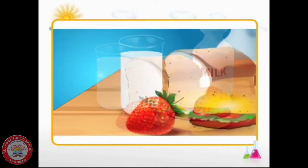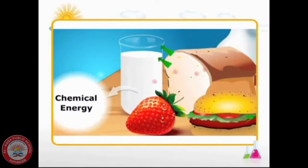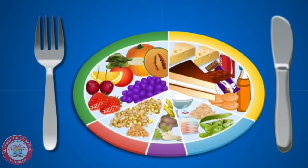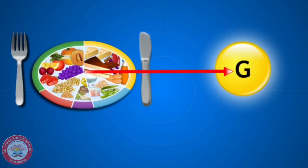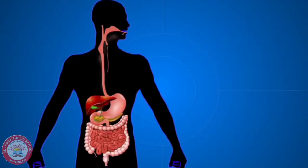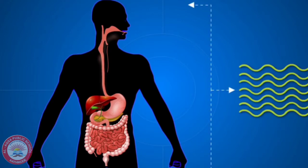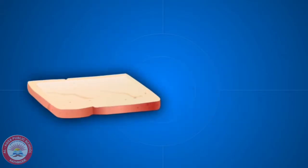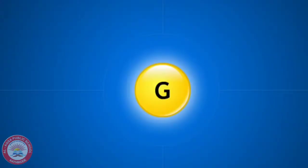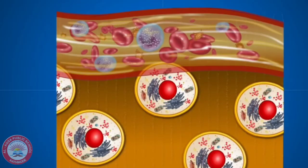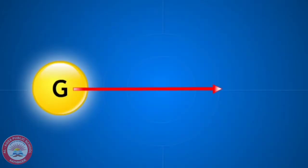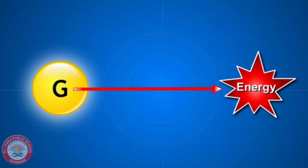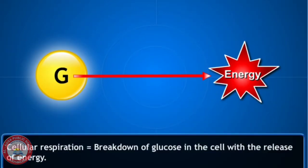What do we get energy from? We get energy from the food we eat. Food has energy stored in the form of chemical energy. The food that we eat must be converted into glucose to release energy. This process of converting food into glucose is done by our digestive system, which produces digestive juices that convert complex carbohydrates into glucose. This glucose is then taken by our blood to different cells. Inside the cell, the glucose is broken down to release energy. This process is called cellular respiration.